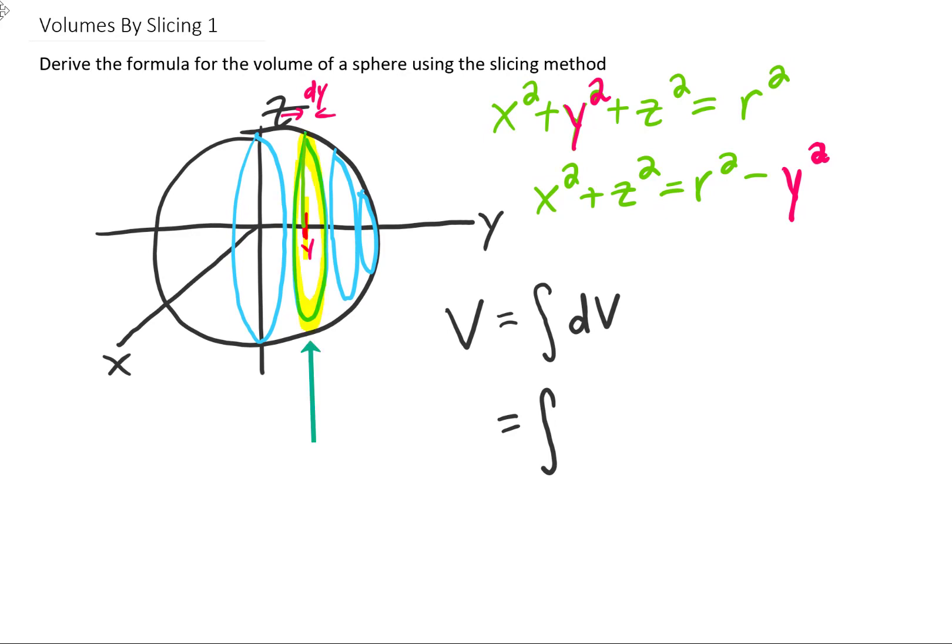The volume of that thin cylinder is just the area of the circle multiplied by dy. So that would just be pi, we'll call it capital R squared dy. Now what is the radius squared of this circle in question here? Well we found it with this equation right here. The radius of each thin circle squared is just little r squared minus y squared.